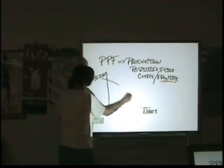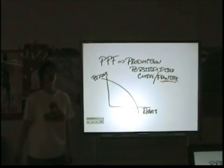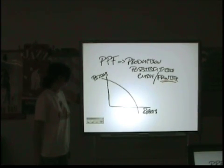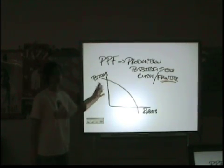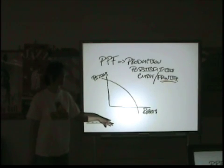And again, with pizzas and robots, you would expect the curve not to be a straight line. Because you don't use the same resources with pizzas and robots.